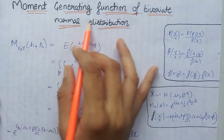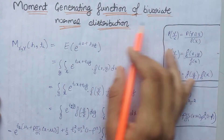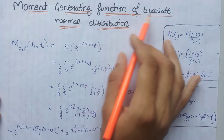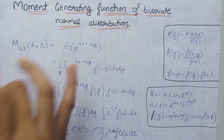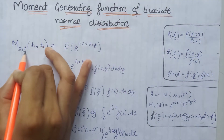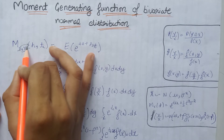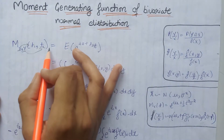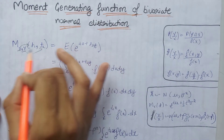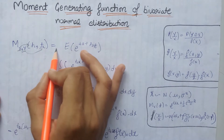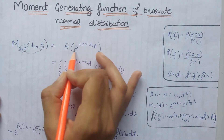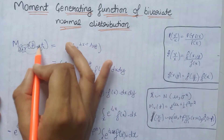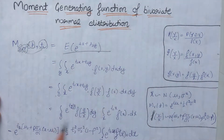Now we will calculate the moment generating function of the bivariate normal distribution. In the bivariate normal distribution, we use two variables x and y. For x, we write t1 and for y, we write t2. According to the definition of the moment generating function, it equals the expectation of e raised to the power t1x plus t2y.